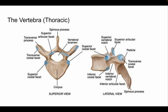Looking at the thoracic vertebra laterally, we have the superior vertebral notch, the superior costal facet — again, call it the superior demi facet — the superior articulating facet, and the pedicle. The transverse costal facet articulates with one of the ribs. We also have the inferior vertebral notch. When two vertebrae articulate, that notch becomes a foramen — we call it the intervertebral foramen because you need two vertebrae to form it. We also have the inferior costal facet and the inferior articular facet.